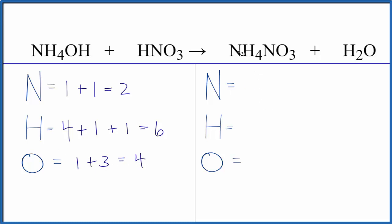On the product side, we have one nitrogen here plus this one, that gives us two. Hydrogens, we have four, plus in the H2O we have these two, so that gives us six. And then oxygens, we have the three plus the one, and that gives us four.